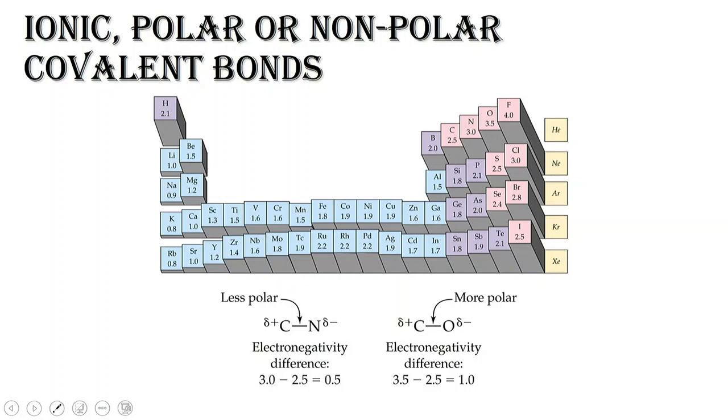So quickly, if we take a look at this periodic table, notice that going from left to right on this periodic table, these numbers are representing electronegativity. This number increases as I go from left to right. This number also increases as I go from bottom to top.